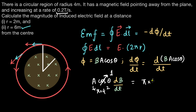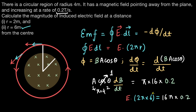So dΦ/dt = π × 16 × 0.2 = 16π × 0.2. Setting E × 2π × 6 = 16π × 0.2, we cancel π, giving E × 12 = 16 × 0.2 = 3.2, so the magnitude of induced electric field comes out to be approximately 0.27 volts per meter.